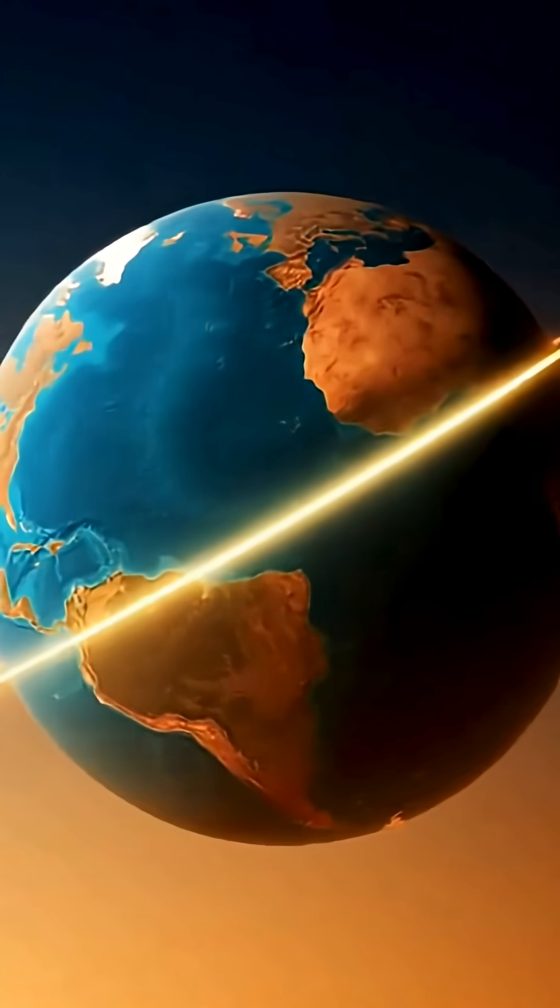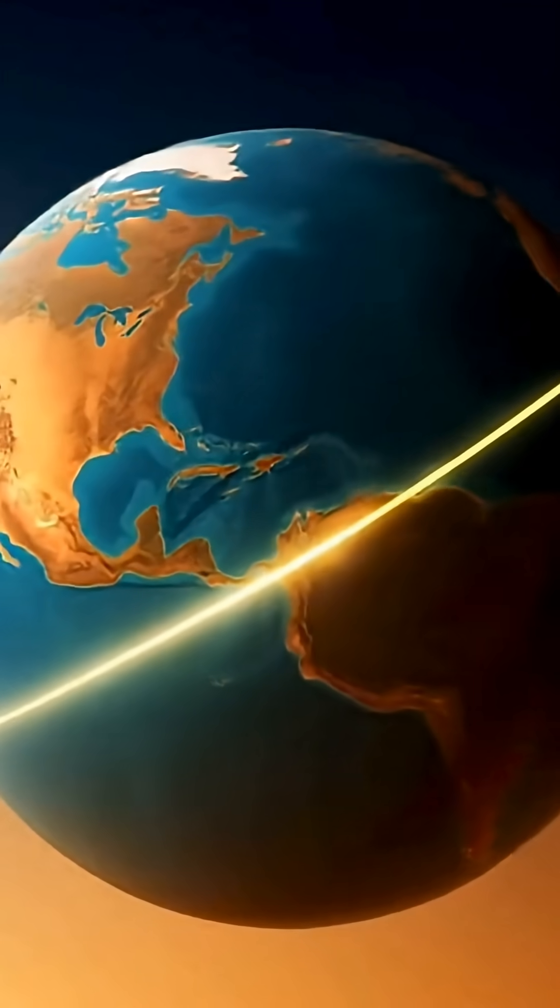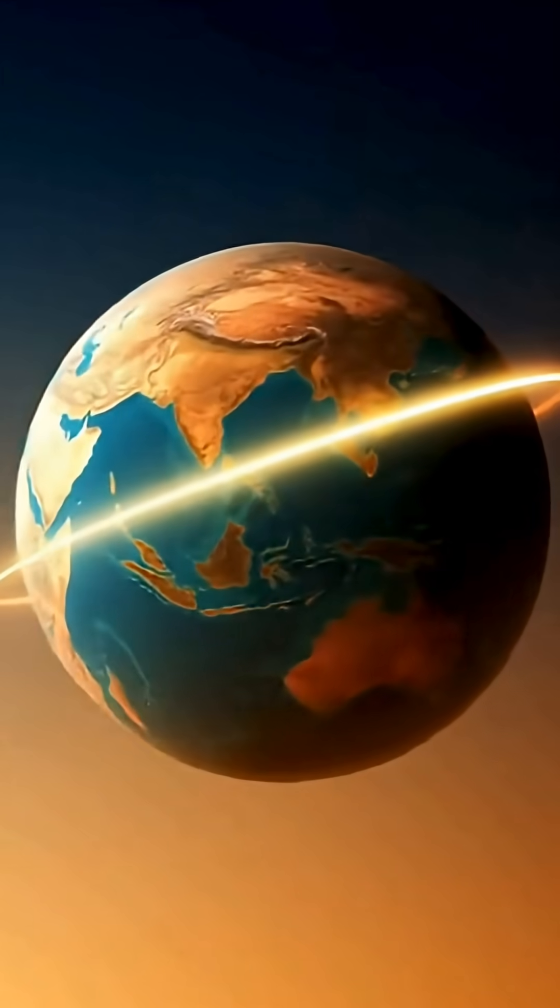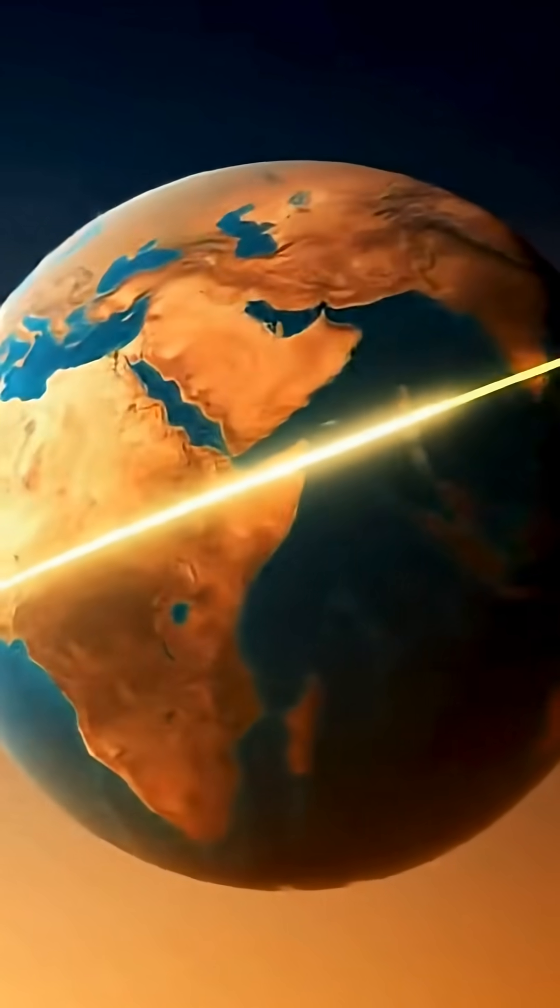Even with Earth's axial tilt, the equator remains close to the zone of direct sunlight. As a result, day and night stay nearly equal in length, about 12 hours each, year-round.